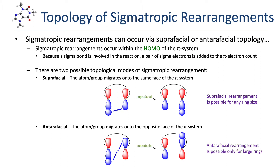In a suprafacial rearrangement, the atom or group migrates onto the same face of the pi system to which it was originally attached. Here we see a simple migration of a hydrogen atom in a symmetric molecular orbital. The s-orbital of the hydrogen atom migrates from the bottom lobe on the left end to the bottom lobe on the right end of the molecular orbital. Because it migrates onto the same bottom face where it was originally attached, the reaction is suprafacial.